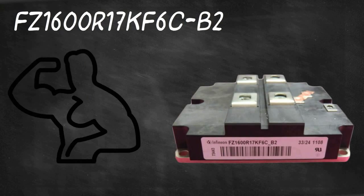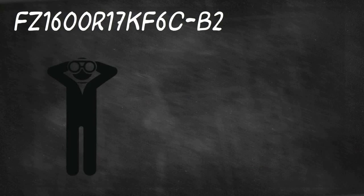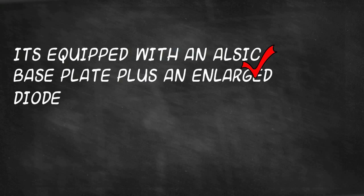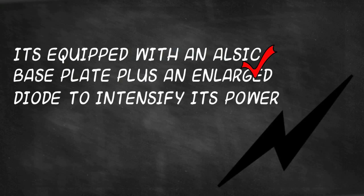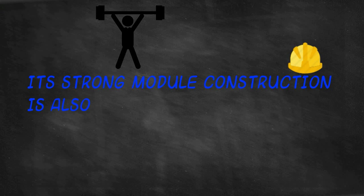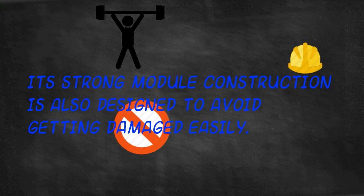FZ1600R17KF6CB2 has powerful features that you can't see in ordinary semiconductors. It's equipped with an ALSIC base plate plus an enlarged diode to intensify its power, and this makes it suitable for regenerative operation. Its strong module construction is also designed to avoid getting damaged easily.